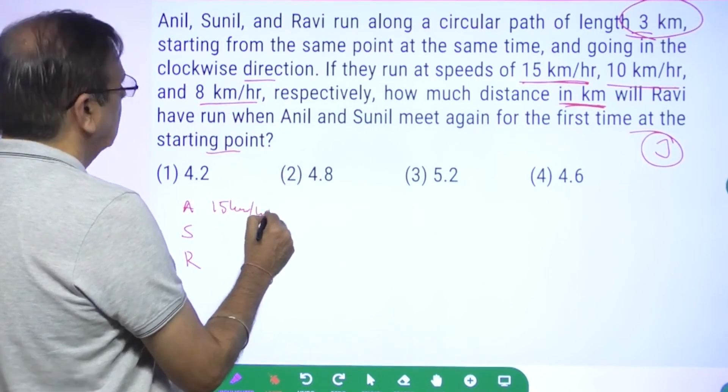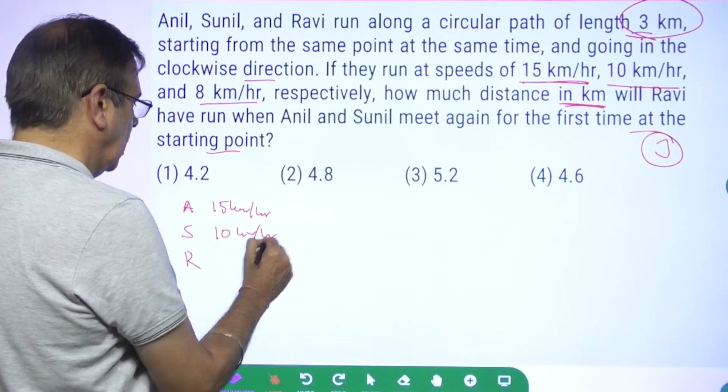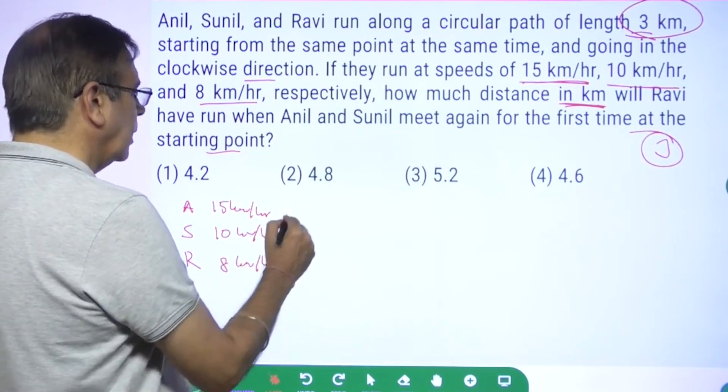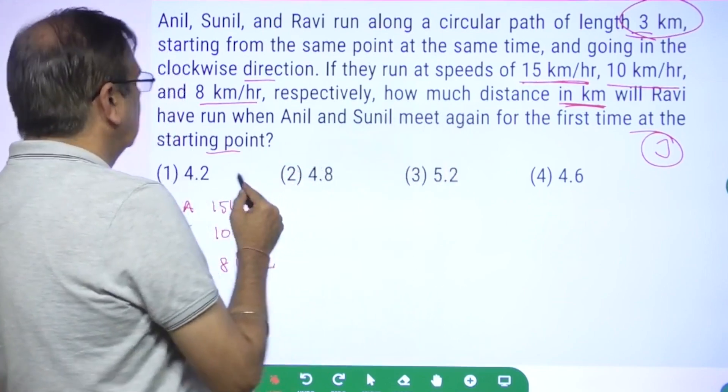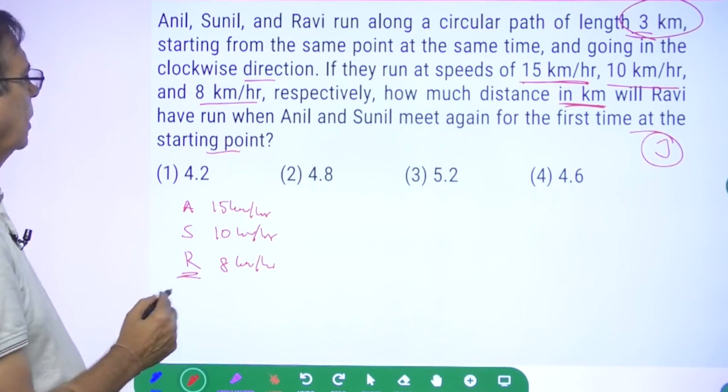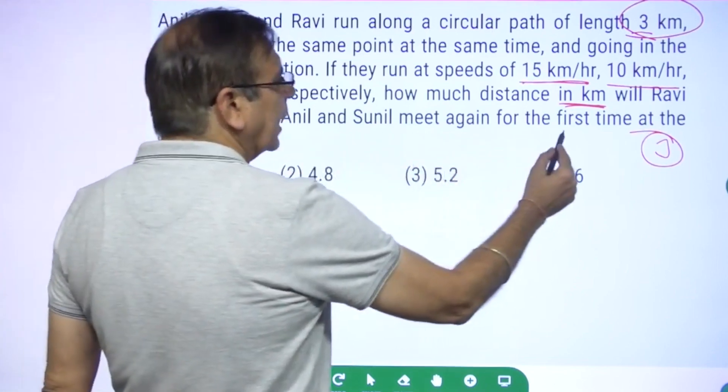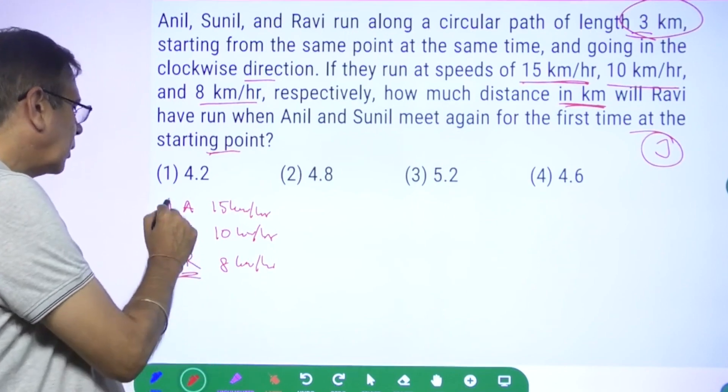We want to find the distance run by Ravi when Anil and Sunil meet again for the first time at the starting point. What is the condition for them to meet at the starting point? LCM of time - the LCM of time taken by Anil and Sunil individually to complete one round.